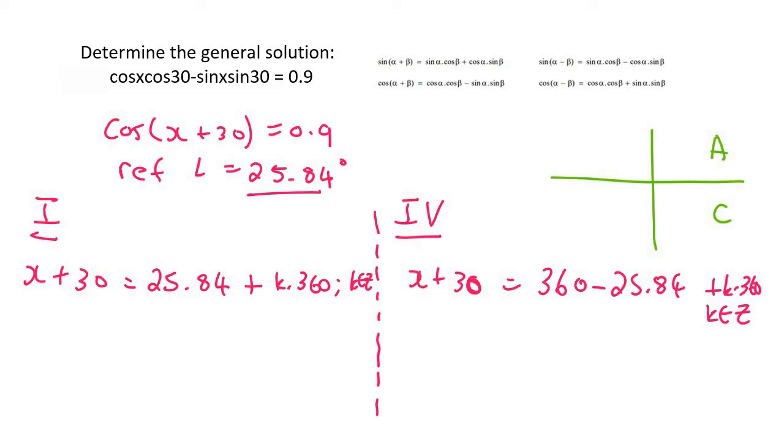Now we're just going to simplify, and so for this one we're going to end up getting negative 4.16 plus k times 360, k is an element of z.